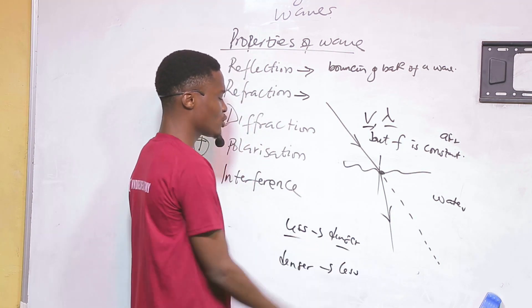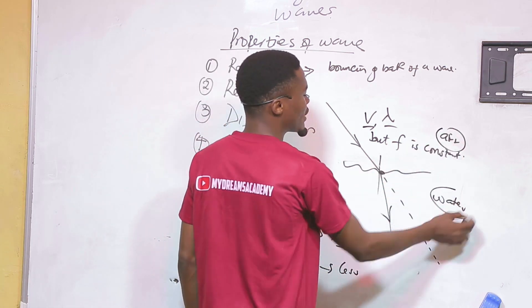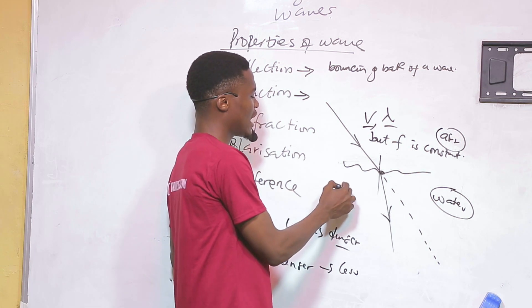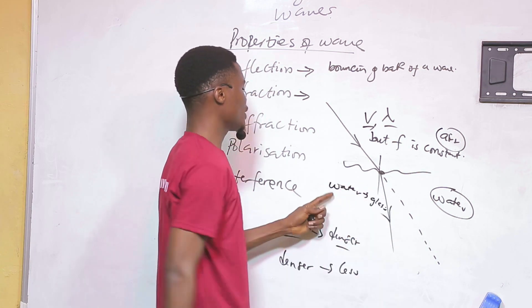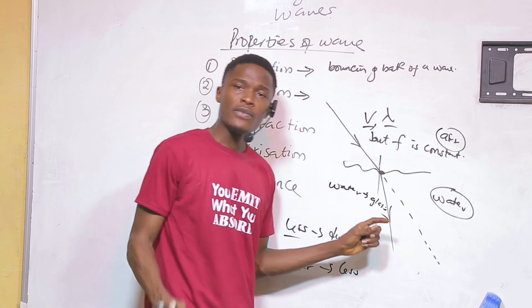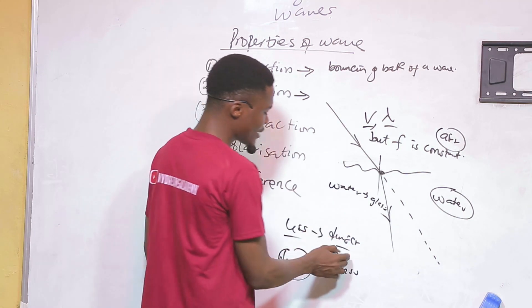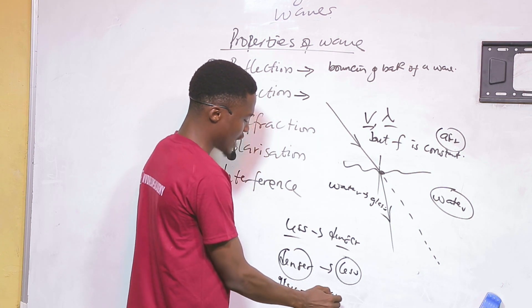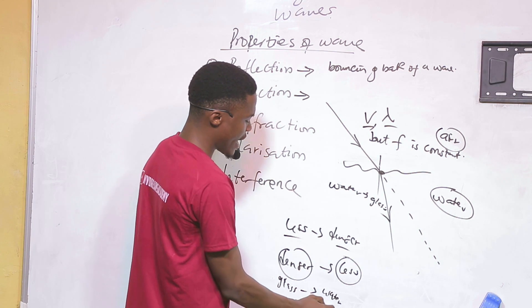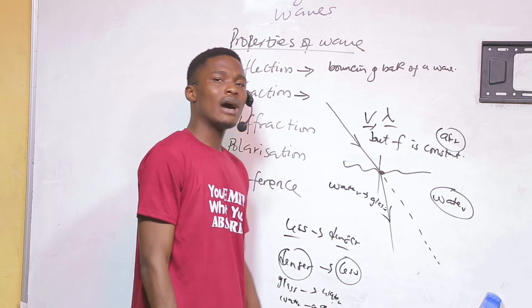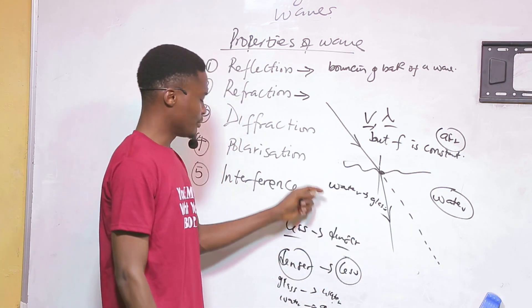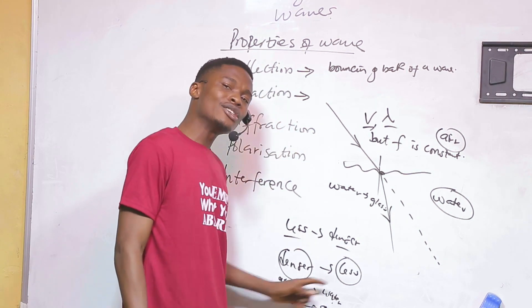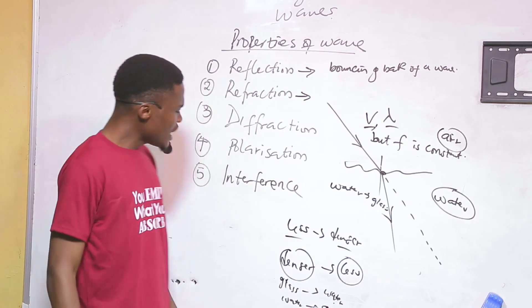For example, from air to water is going from less dense to denser, so the speed will decrease. From water to glass: water is less dense than glass, so the velocity and wavelength will also decrease. Conversely, going from glass to water or from water to air — denser to less dense — the speed and wavelength will increase.